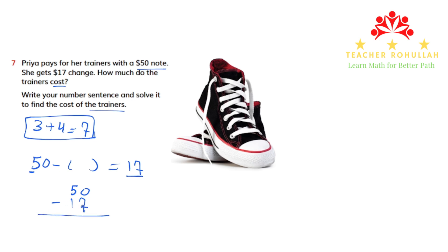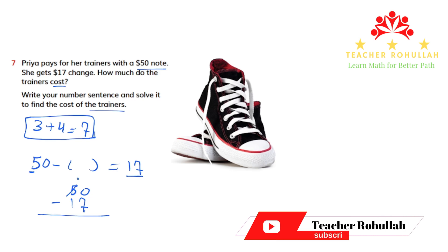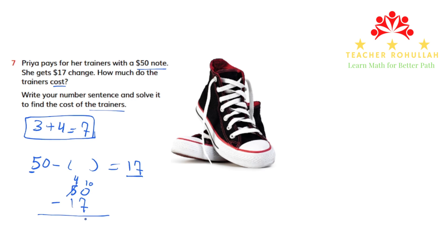We cannot subtract 7 from 0, so we borrow from the 5. That leaves 4 in the tens place and we have 10 in the ones place. Now, 10 minus 7 is 3, and 4 minus 1 is also 3. So the trainer's cost is $33.